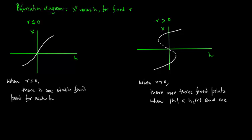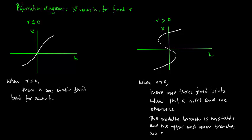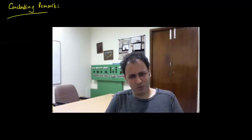When r is greater than 0, there are three fixed points when the absolute value of h is less than h_critical and one otherwise. Note that the middle branch is unstable and the upper and lower branches are stable.